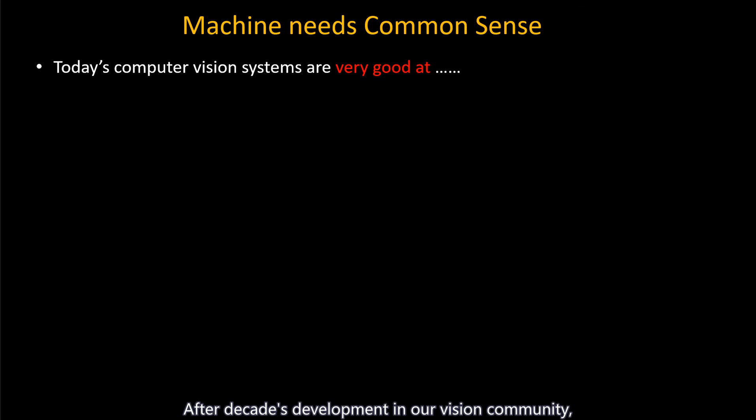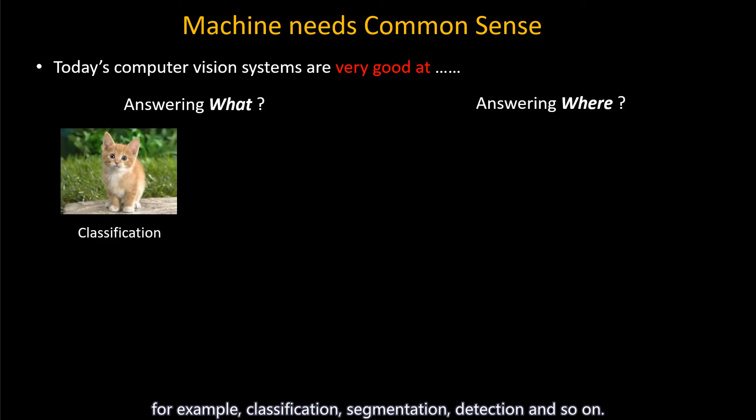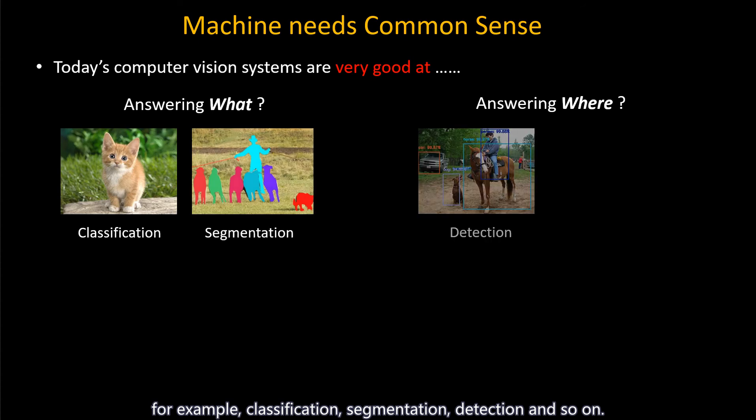After decades of development in our vision community, today's CV systems are very good at answering the questions of what and where. For example, classification, segmentation, detection, and so on.